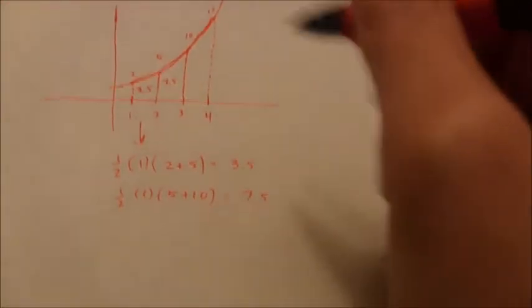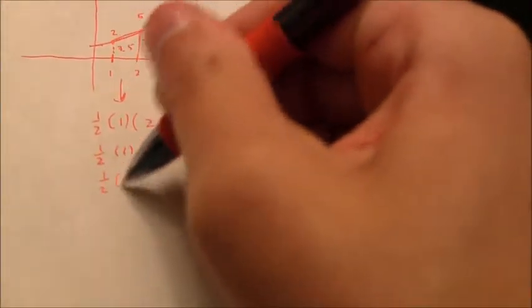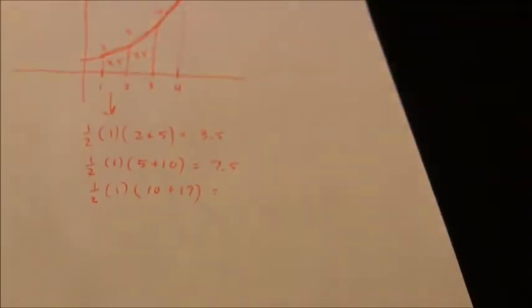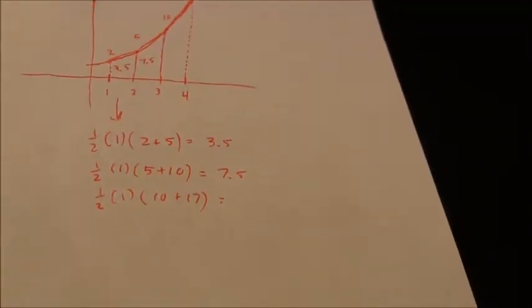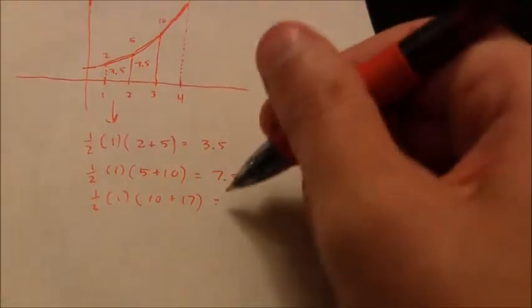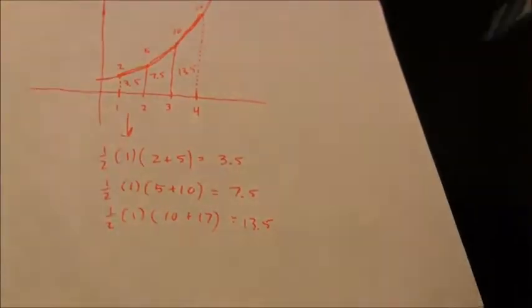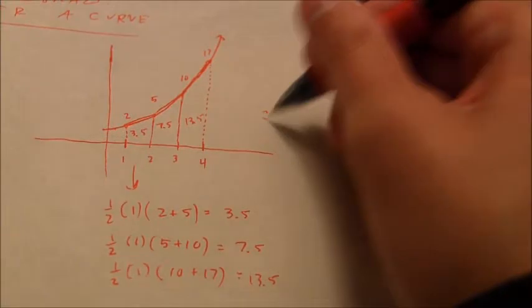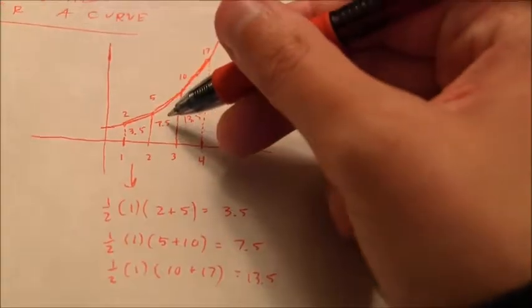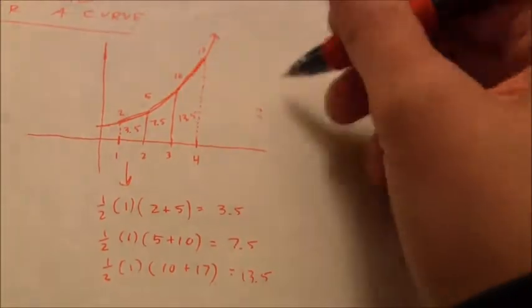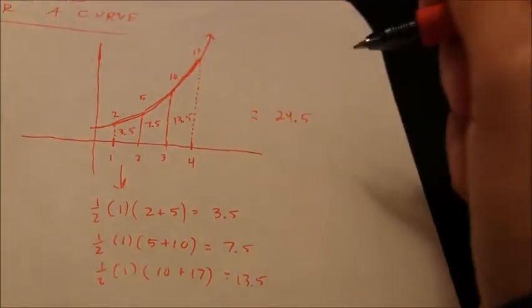For the last trapezoid, it's half the height times the sum of the bases — 10 and 17 in this case. That's half of 27, which is 13.5. The integral is the sum of all of those, so 3.5 and 7.5 add up to 11, and adding 13.5 gives approximately 24.5 square units.